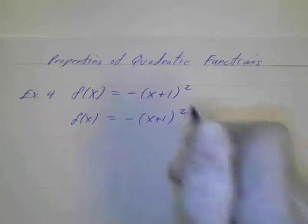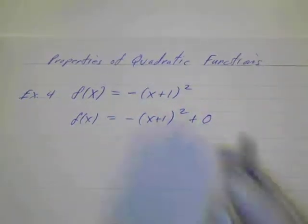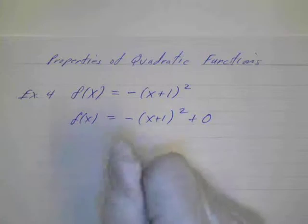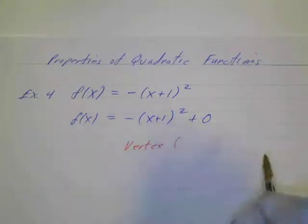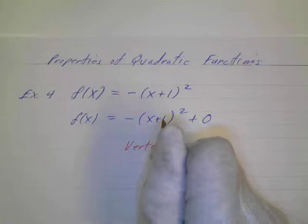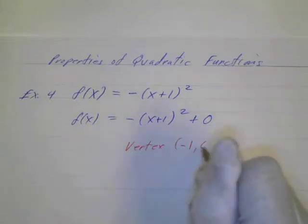And that's going to be plus 0 because we don't have a number over here. So now we can determine the vertex is going to be the point negative 1 because it's always opposite that, negative 1, and 0. So there's your vertex.